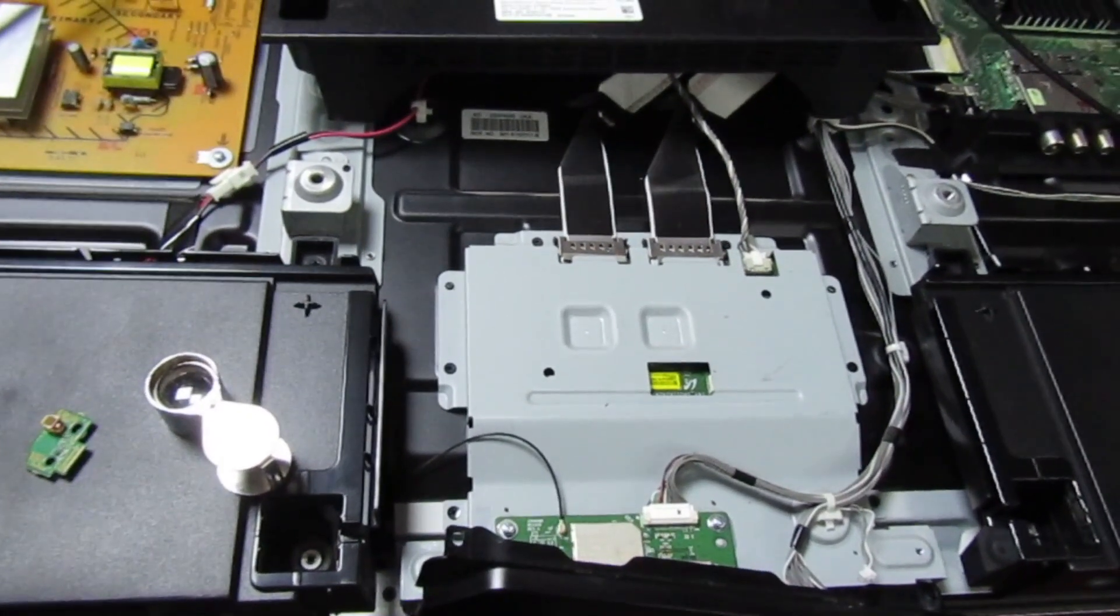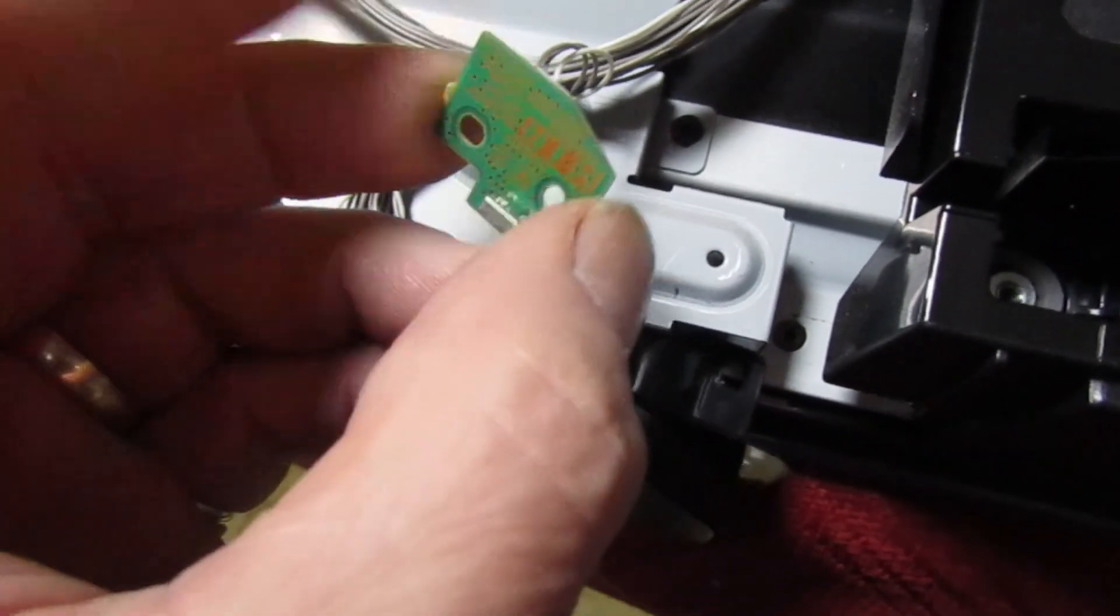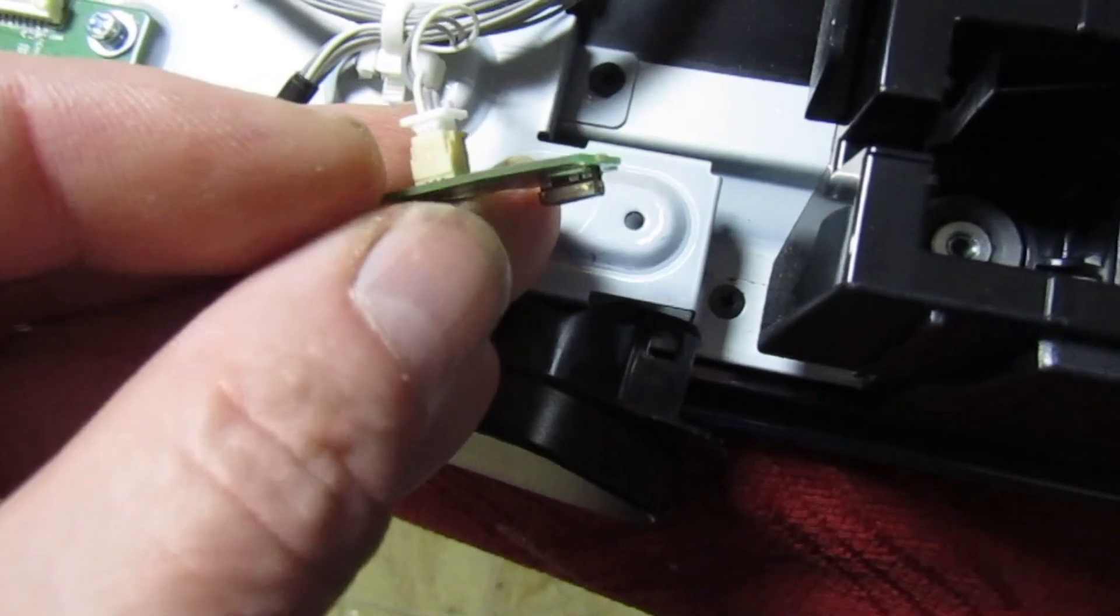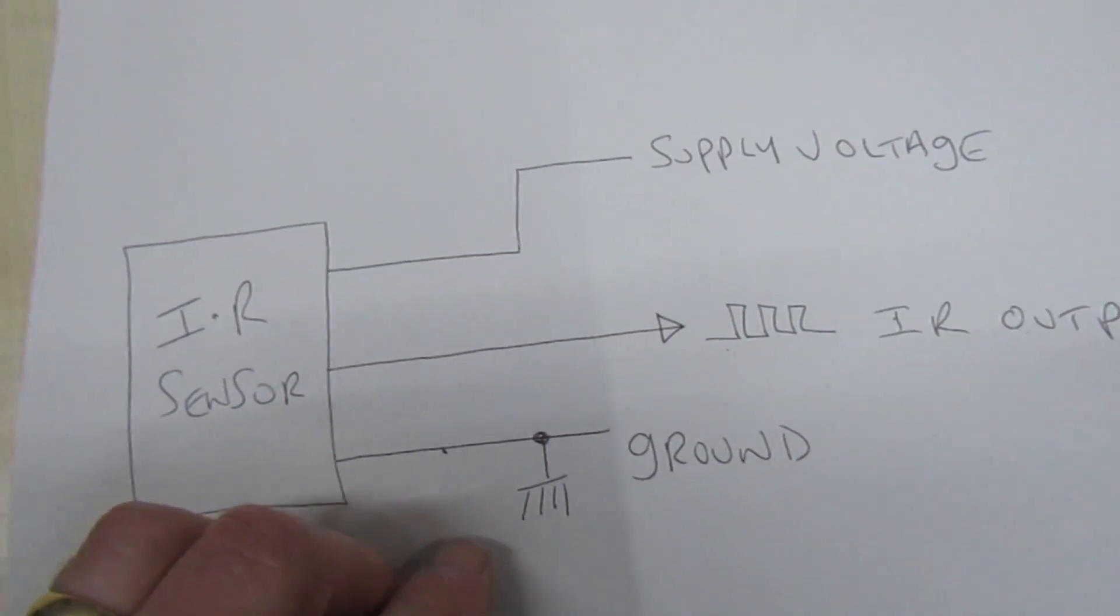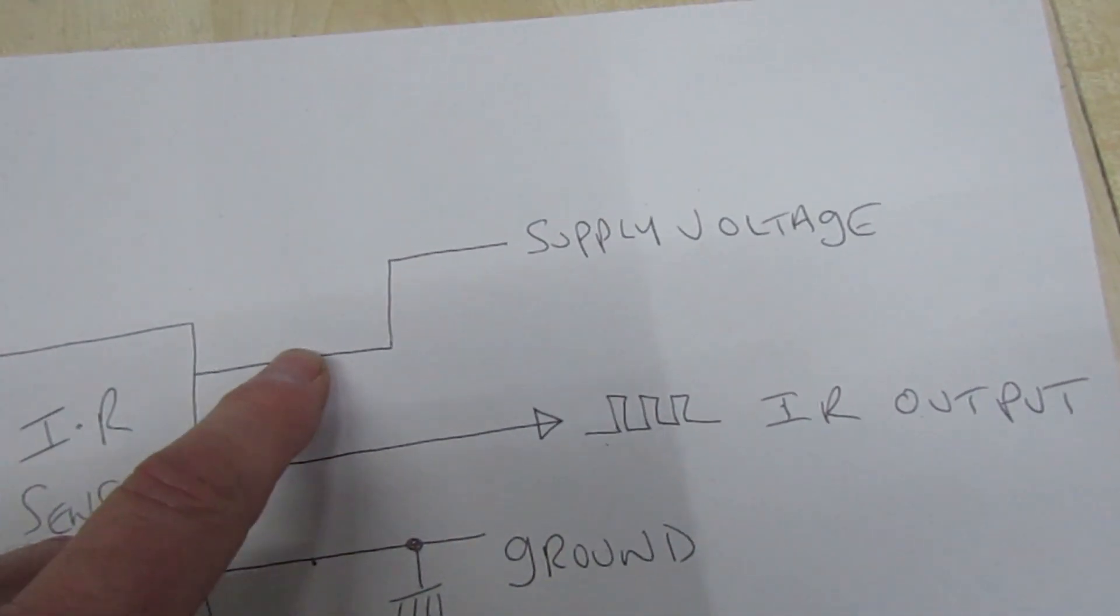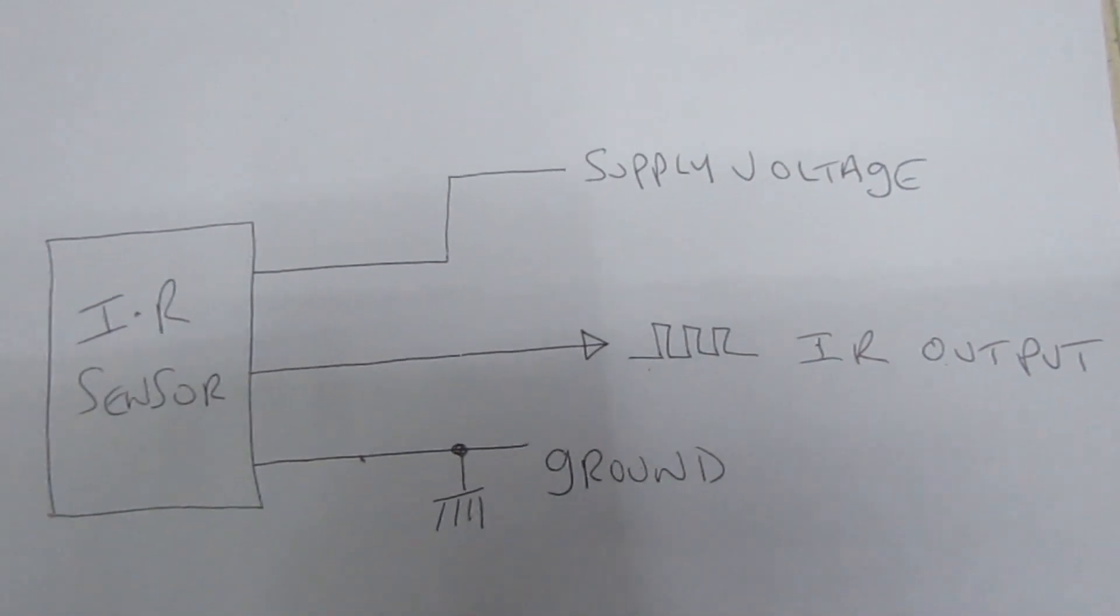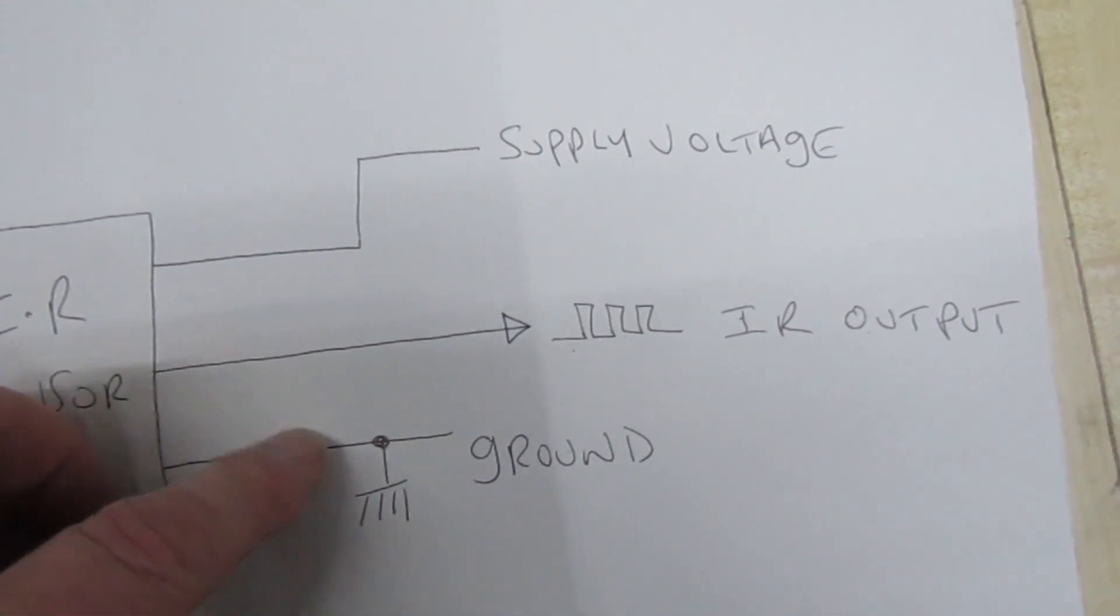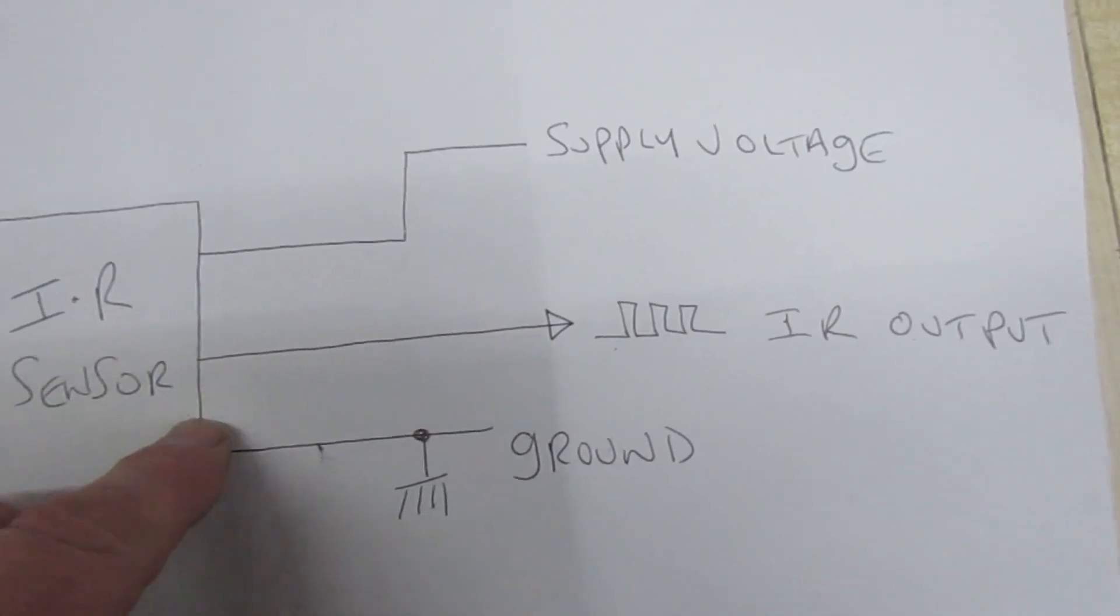The first thing we do is locate the infrared remote control sensor board mounted on the front. These are pretty similar in most TVs - they've got three connections. I've drawn a quick diagram to show you what to look for. You've got the infrared sensor with three connections: ground, an infrared output, and a supply voltage which is usually 3.5 or 5 volts. You clip on your oscilloscope and press the remote control, and if there's a pulse output then you know the sensor's working.